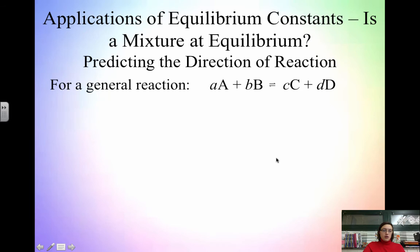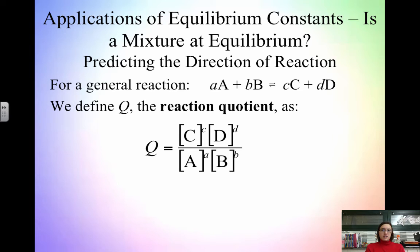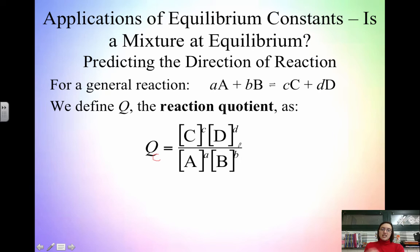Now we'll look at applications of the equilibrium constant. The big question is: is the mixture at equilibrium? We use what's called the reaction quotient, Q. For a general reaction, Q — specifically Qc — is defined as the concentration of products over the concentration of reactants. We can also have Qp when using pressures. Q looks like Keq, but the difference is that Q is evaluated at current, non-equilibrium conditions.